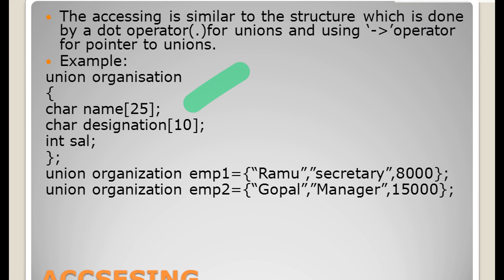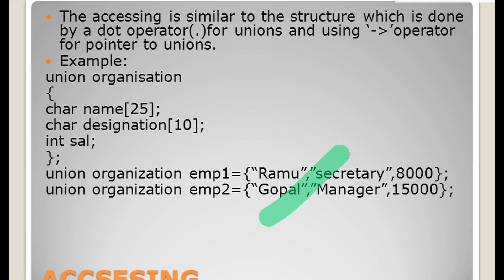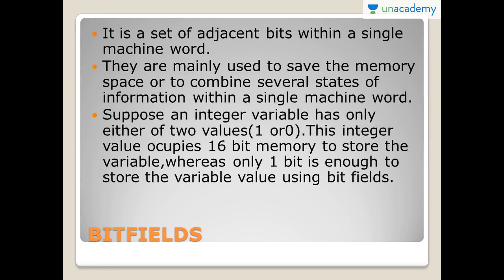As an example, we have an organization which needs different data types. We can take Union Organization with CarName of size 25 and CarDesignation of size 10 — those are character fields — and also Salary, which is a different data type. This could be accessed by variable1.member1. For example, I have given two employee names, Ramu and Gopal, but you can give as many as you want depending upon the size. After you declare the structure, it could be accessed by a dot operator, which is very simple and easy to understand.